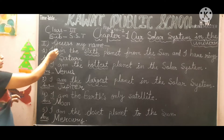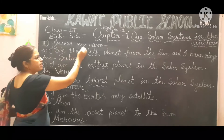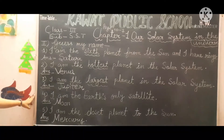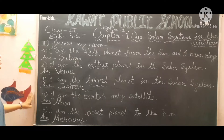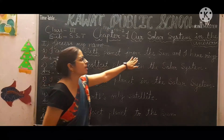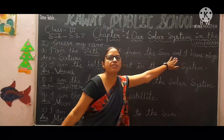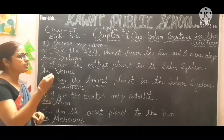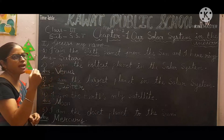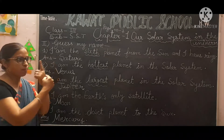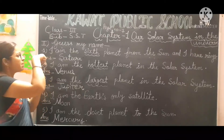Next question is 'Guess My Name.' First: I am the sixth planet from the sun and I have rings. Which planet has rings? That planet is Saturn.